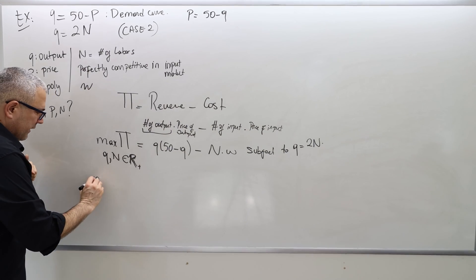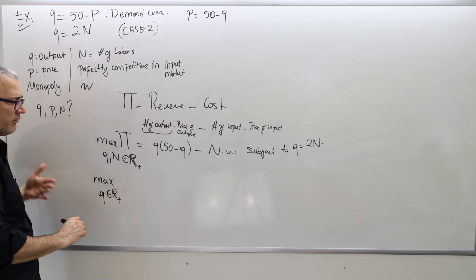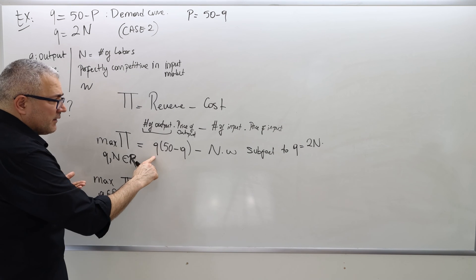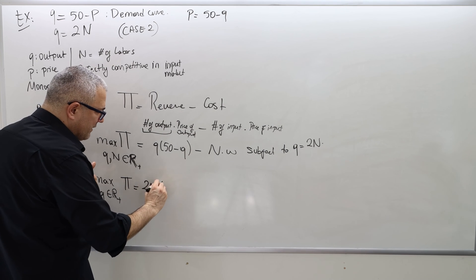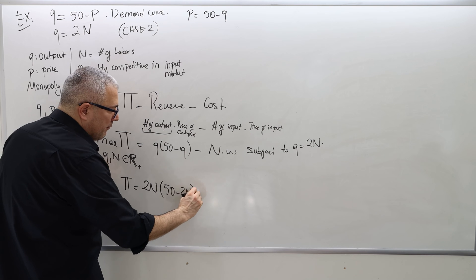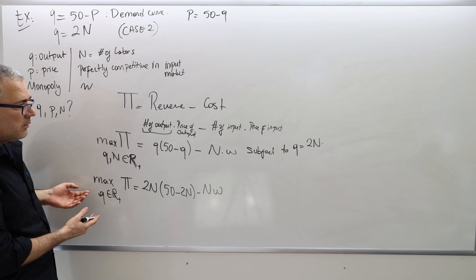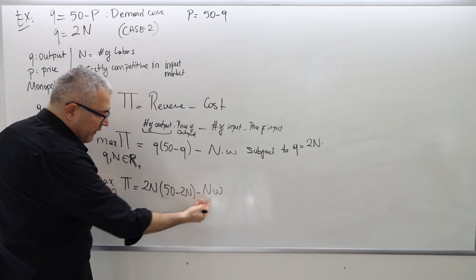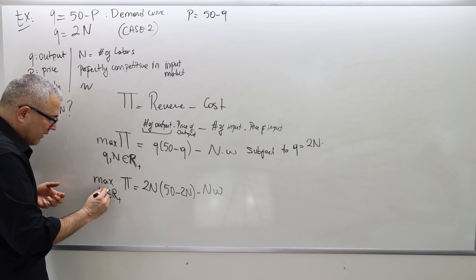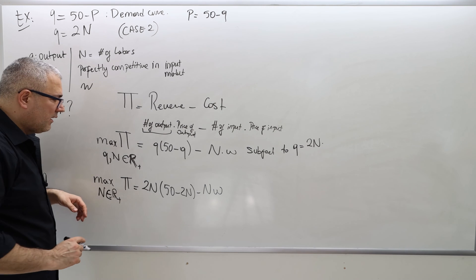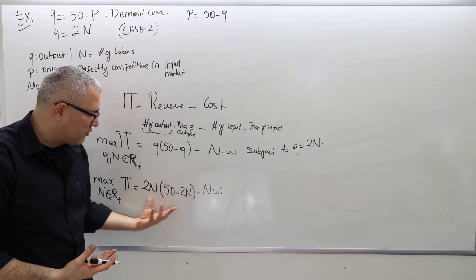So currently, we have two variables to maximize this function. I can reduce it into 1. So equivalently, this is maximized by choosing Q, which is non-negative real number, pi, where pi is, remember, instead of Q, I'm going to put 2N. So 2N times 50 minus 2N minus NW. What am I choosing? I'm choosing—oh, okay. Well, everything is written as a function of N. So therefore, I'm choosing N. So that's a nice mistake that I did. So whenever I see Q, I plugged 2N. And so everything became as a function of N.